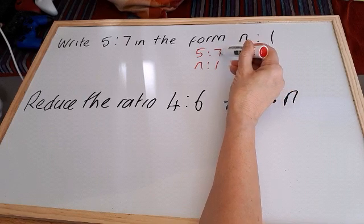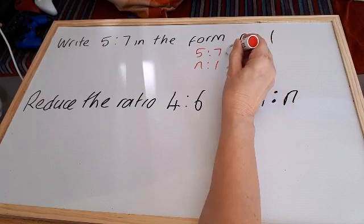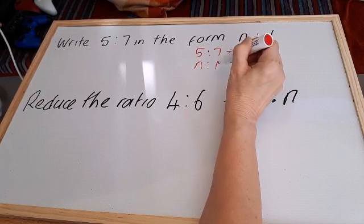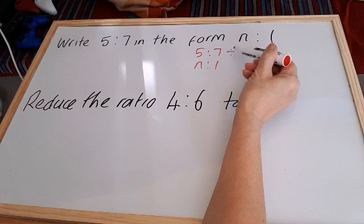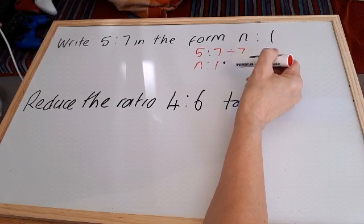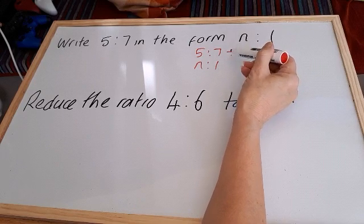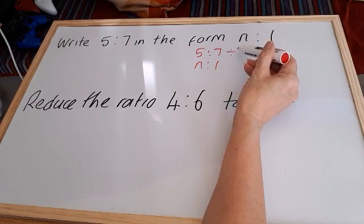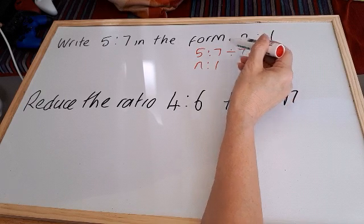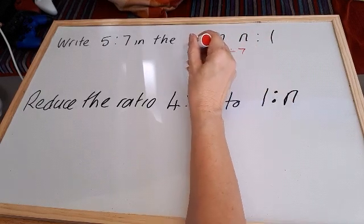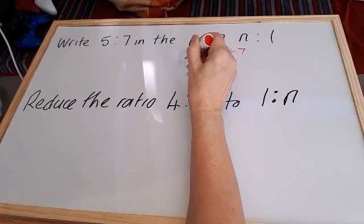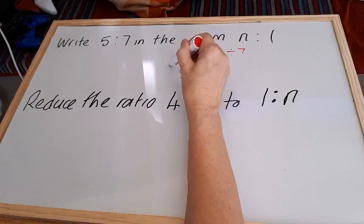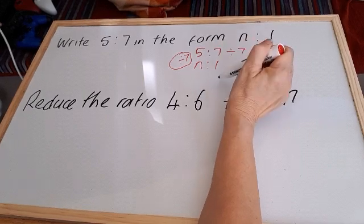To get 7 to 1, we divide it by itself. 7 divided by 7 will give us 1. A number divided by itself gives us 1. So now we've done this to the right side. We do it to the left side. 5 divided by 7. We divide it by 7. So we've done the same to both sides.